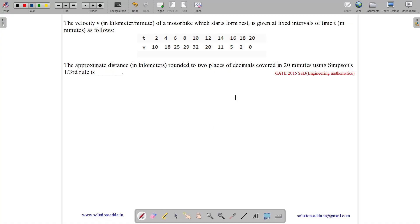This question belongs to Engineering Mathematics and was asked in GATE CSE 2015 set 3. So the question states, the velocity v in km per minute of a motorbike which starts from rest is given at fixed intervals of time t in minutes.